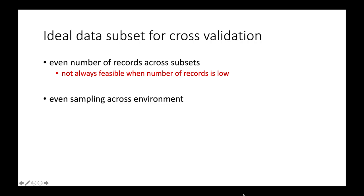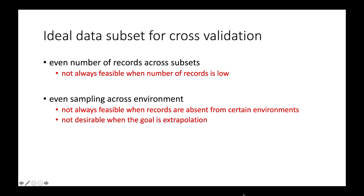We also might want even sampling across the environment for our subsets. This is not always feasible when records are absent from certain environments. However, this also might not be desirable at all when the goal is extrapolation. When you want the model to extrapolate during cross-validation, when you want it to predict to new conditions, you want one of the subsets to represent new environmental conditions. And so even sampling across the environment is not always preferable, it just depends on what the goal is.